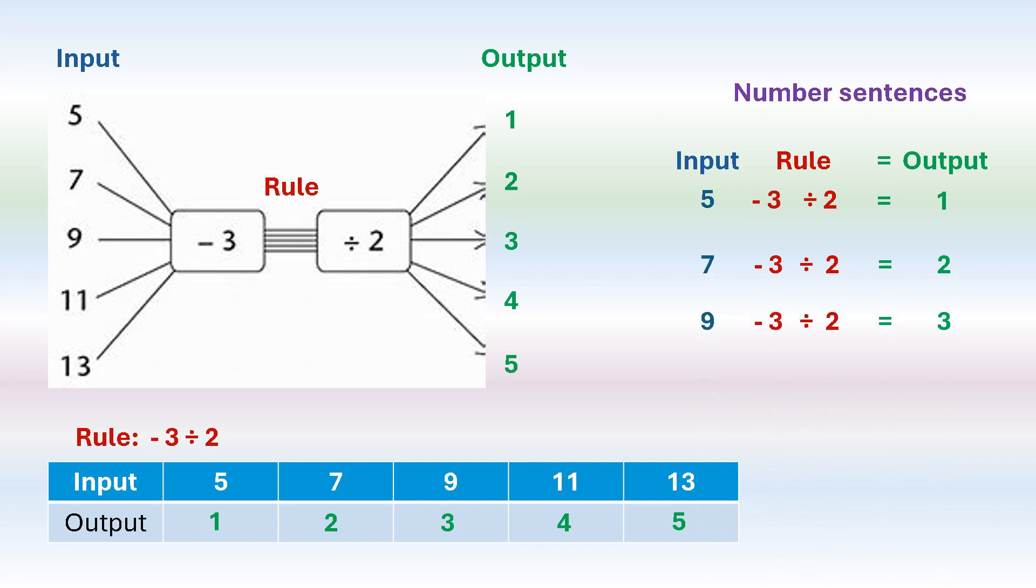And we can do that same thing with the 7, the 9, 11. And we can say 11 minus 3 divided by 2 is 4. And 13 minus 3 divided by 2 is 5.